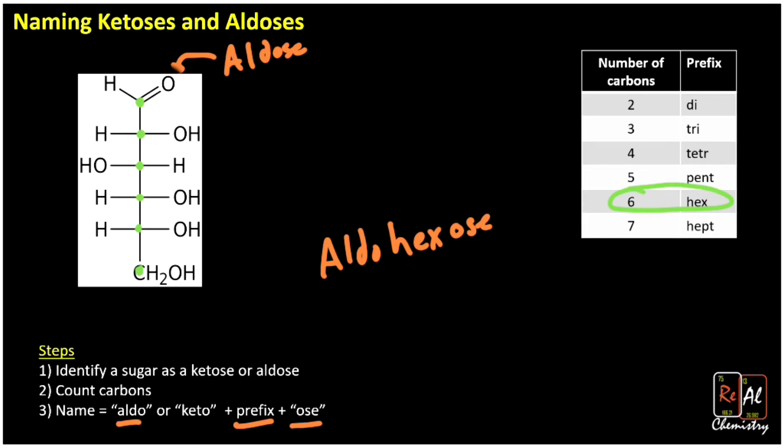So this is an aldohexose. Each part of that name tells me something different. This tells me if I have an aldehyde or a ketone. In this case, I have an aldehyde. And the middle there tells me the number of carbons. And the end there just tells me it's a sugar. Now, of course, aldohexose doesn't refer to just one exact sugar. There's many different aldohexoses. So it's kind of just a way to categorize our sugar by aldehyde or ketone and the number of carbons.